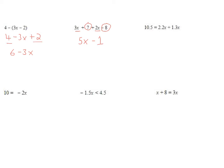Now we have an equation. I have two terms with x on the right-hand side, so I can combine those first — you always want to simplify before you start solving. So 2.2x plus 1.3x gives me 3.5x, and I still have 10.5 on the left-hand side. This is a one-step equation; my operation is multiplication. To undo the 3.5 I divide by 3.5 on both sides, and I get x equal to 3.